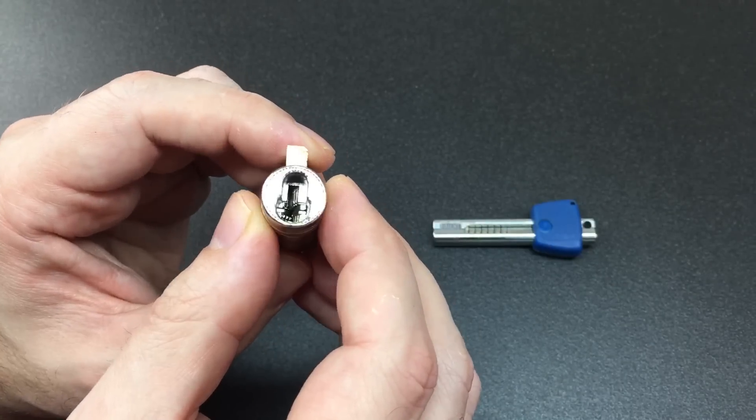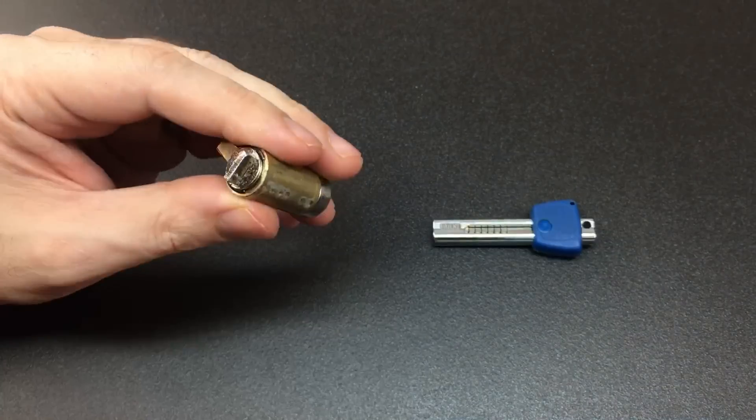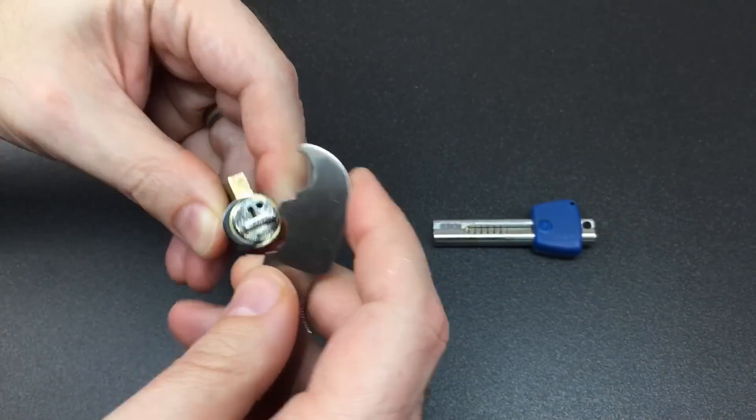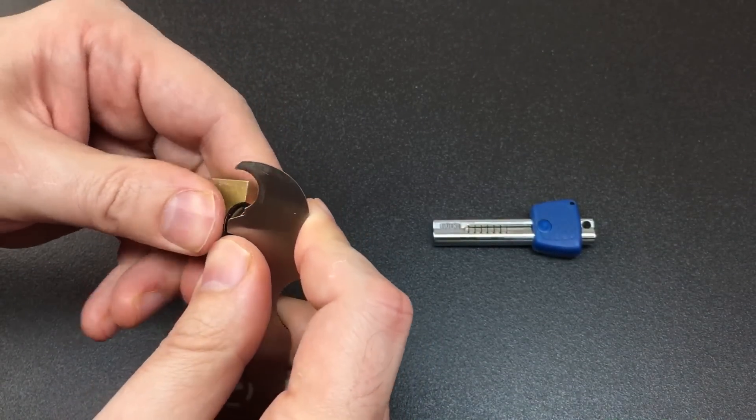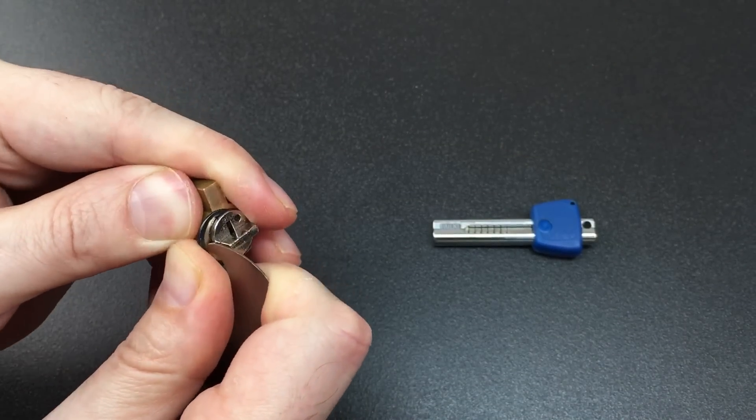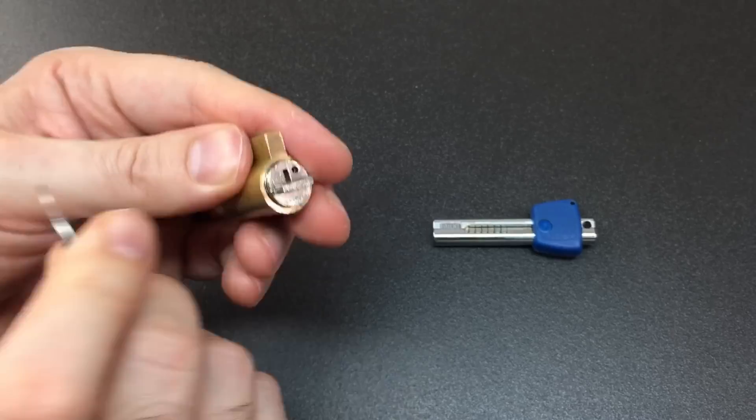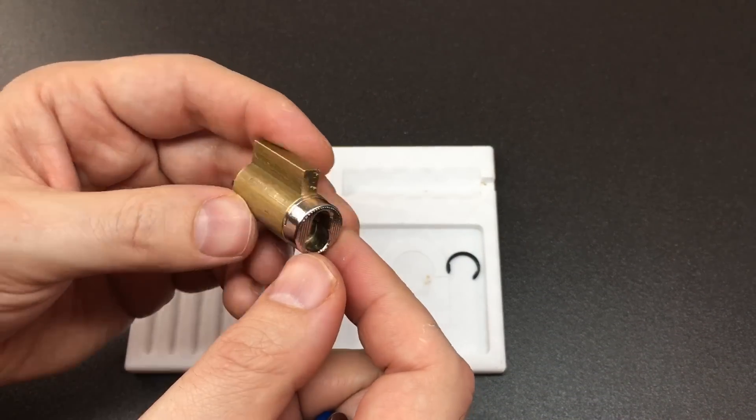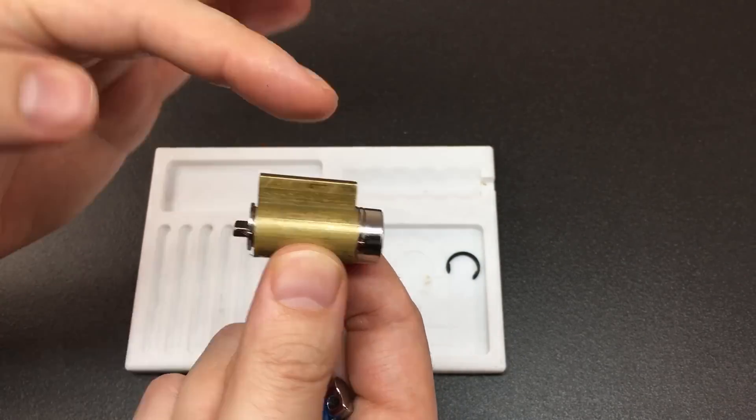I think what we need to do is see this lock taken apart, and that isn't too hard to do. The first thing we need to do is remove the circlip off the back. That can be a bit tricky because it doesn't appear to be a standard size, but with the right tool we can just remove it quite relatively easily. Now we've removed the circlip off the back, the next thing to do is of course remove the core or the plug from this body and the Bible.